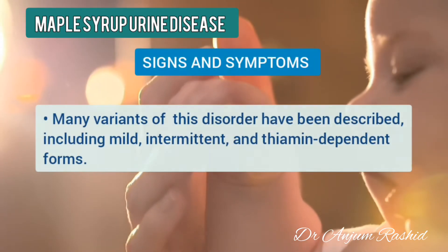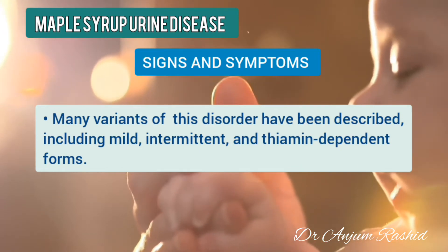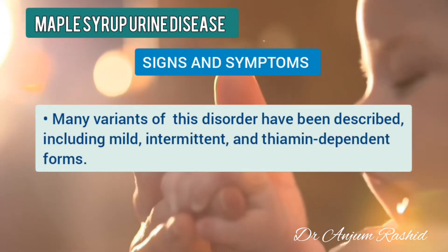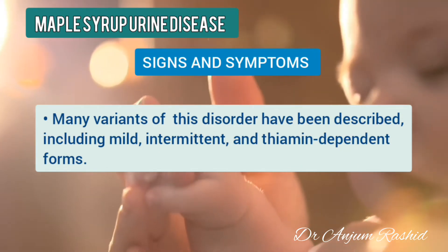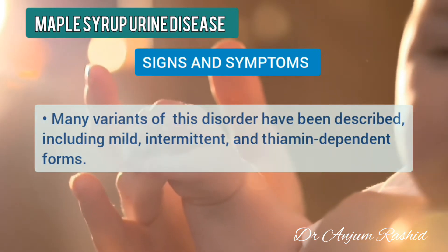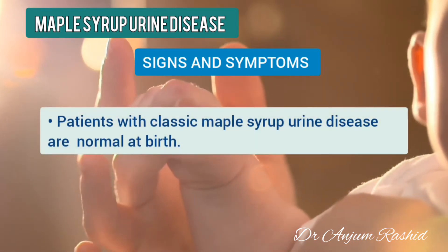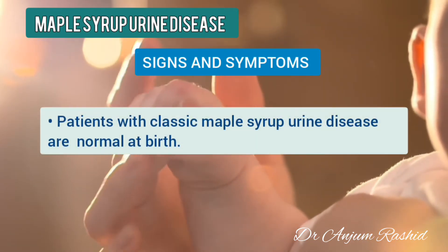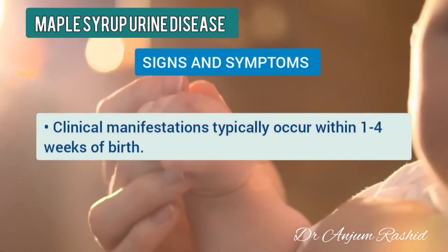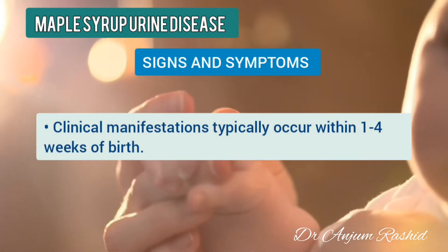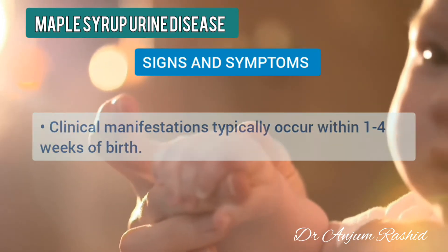Many variants of this disorder have been described including mild, intermittent and time-independent forms. Patients with classic maple syrup urine disease are normal at birth, and clinical manifestations typically occur within one to four weeks of birth.